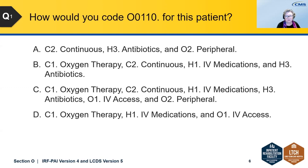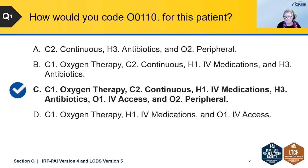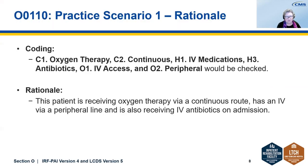It looks like most of you checked C, and that answer was correct — 65% of you chose answer C. You would check oxygen therapy, continuous, IV medications, as well as antibiotics, IV access, and O2 peripheral. On admission, this patient is receiving continuous oxygen, has a peripheral IV line, and is also receiving IV antibiotics.